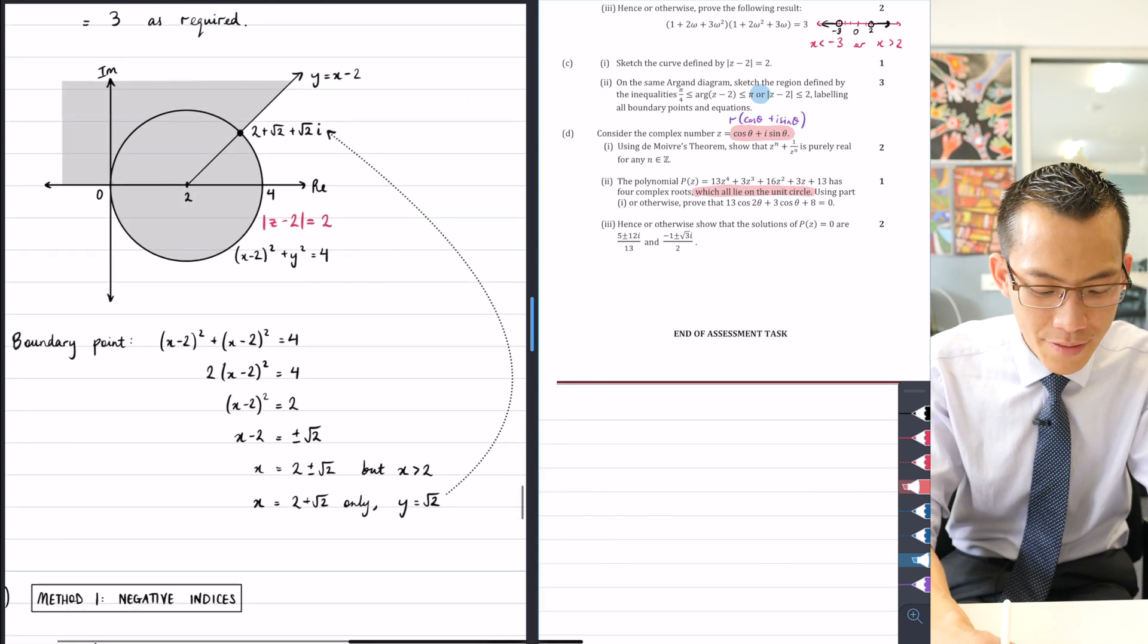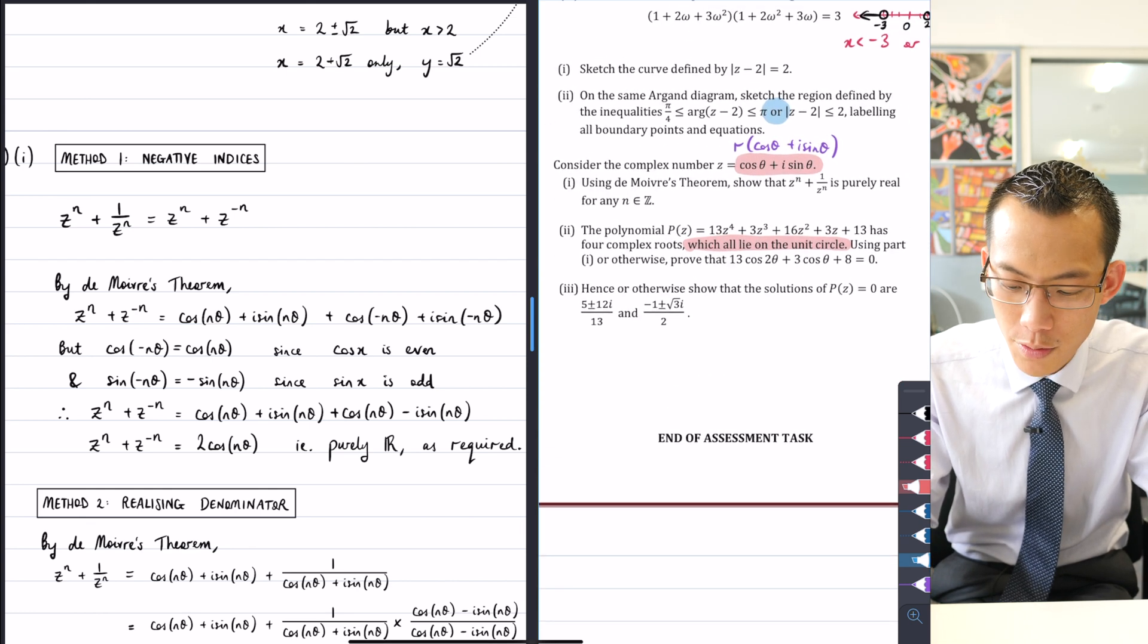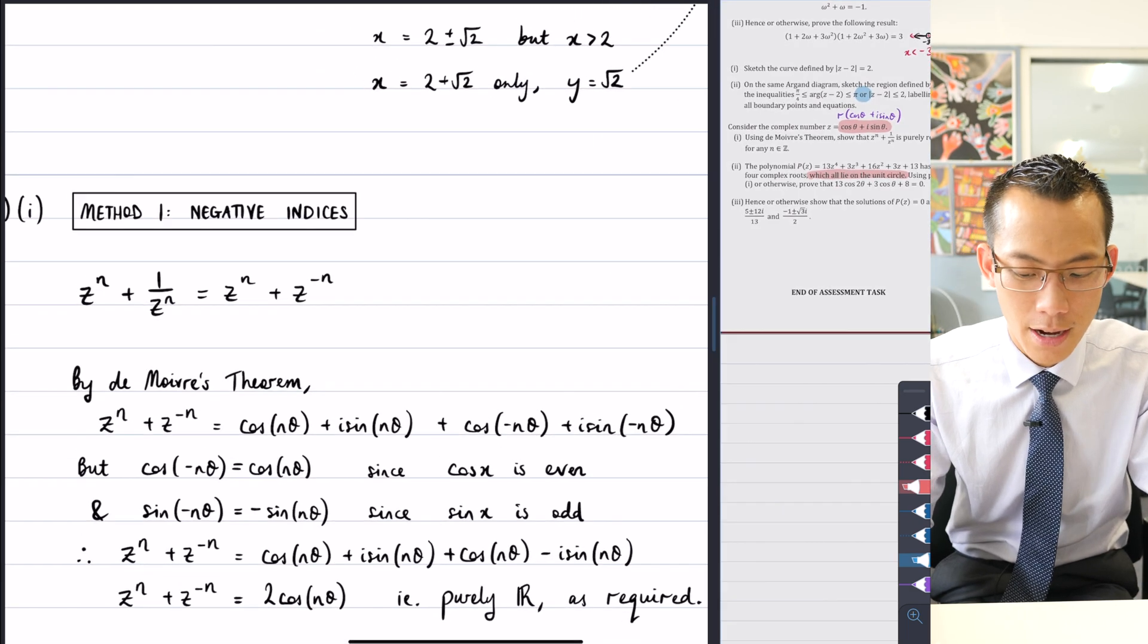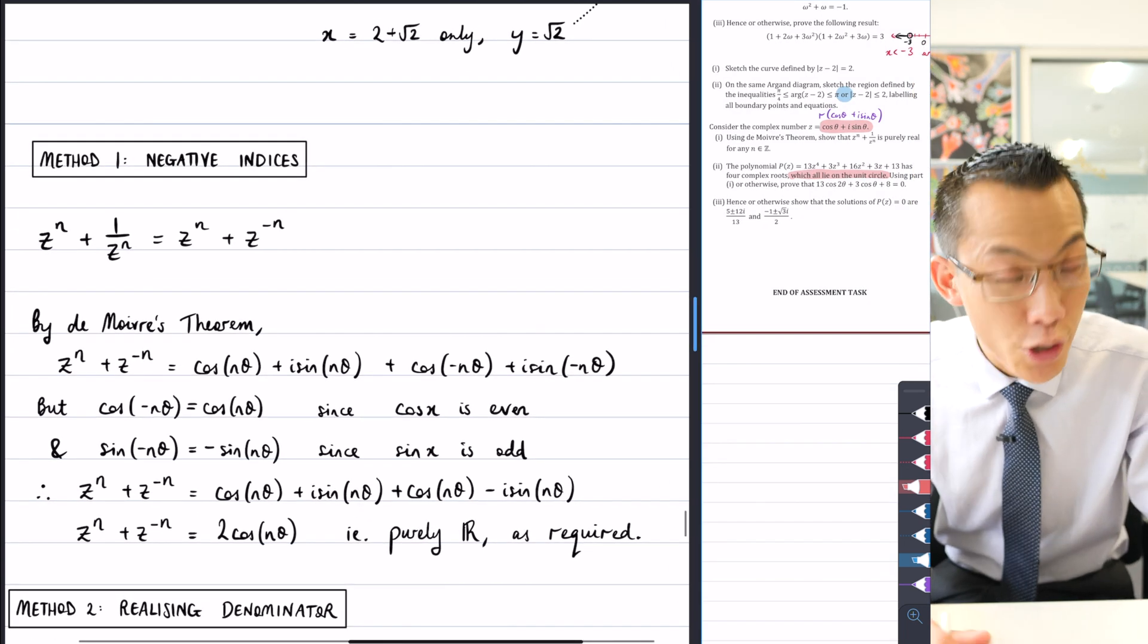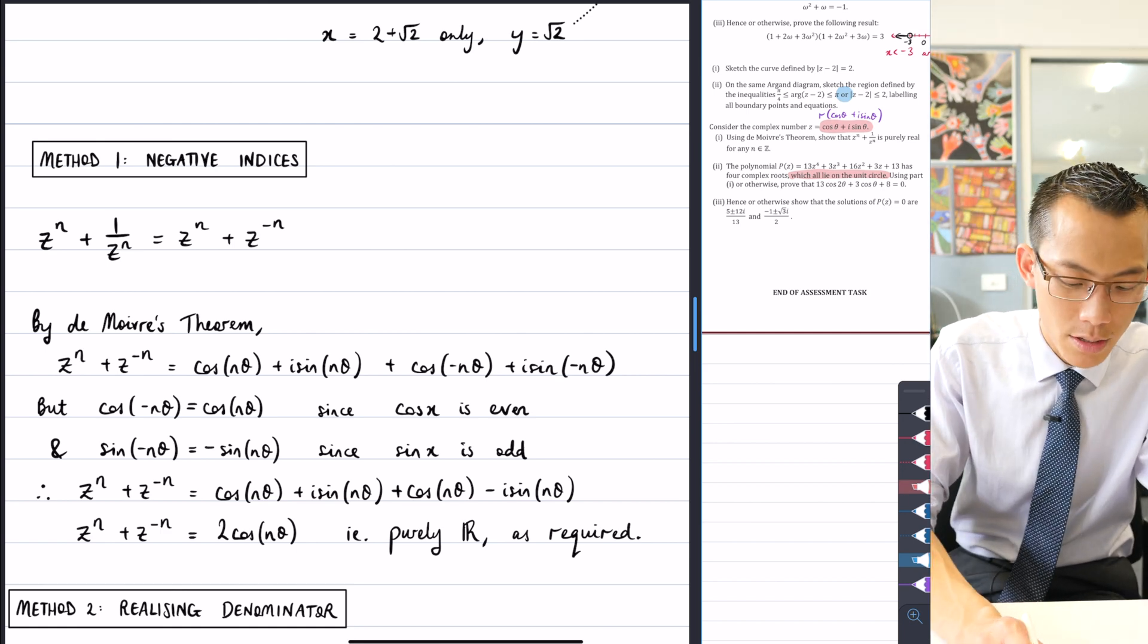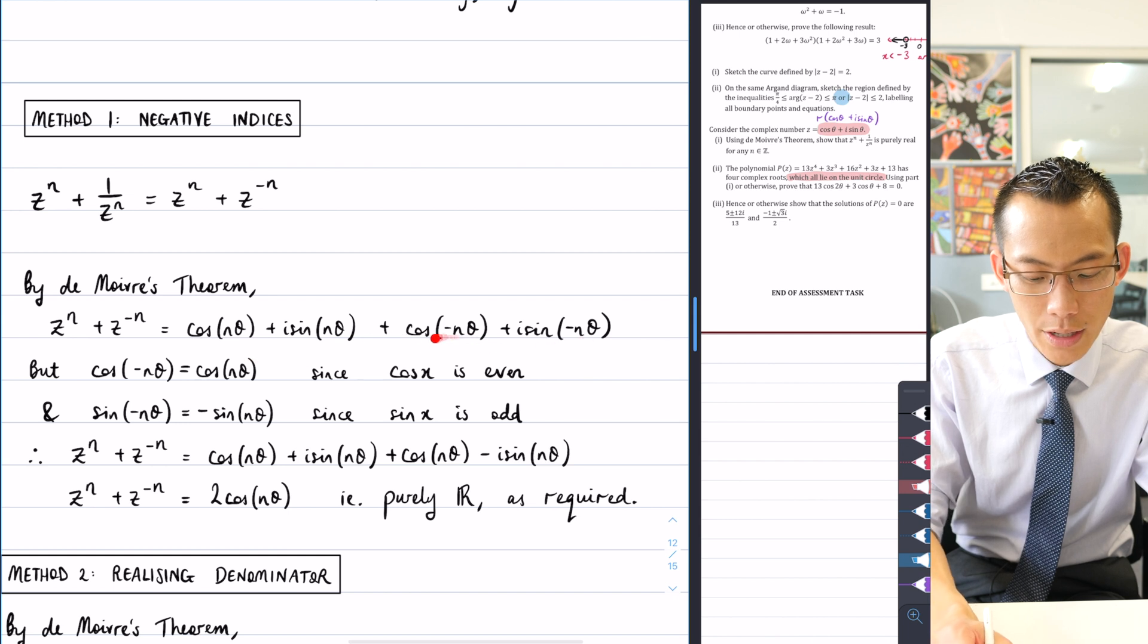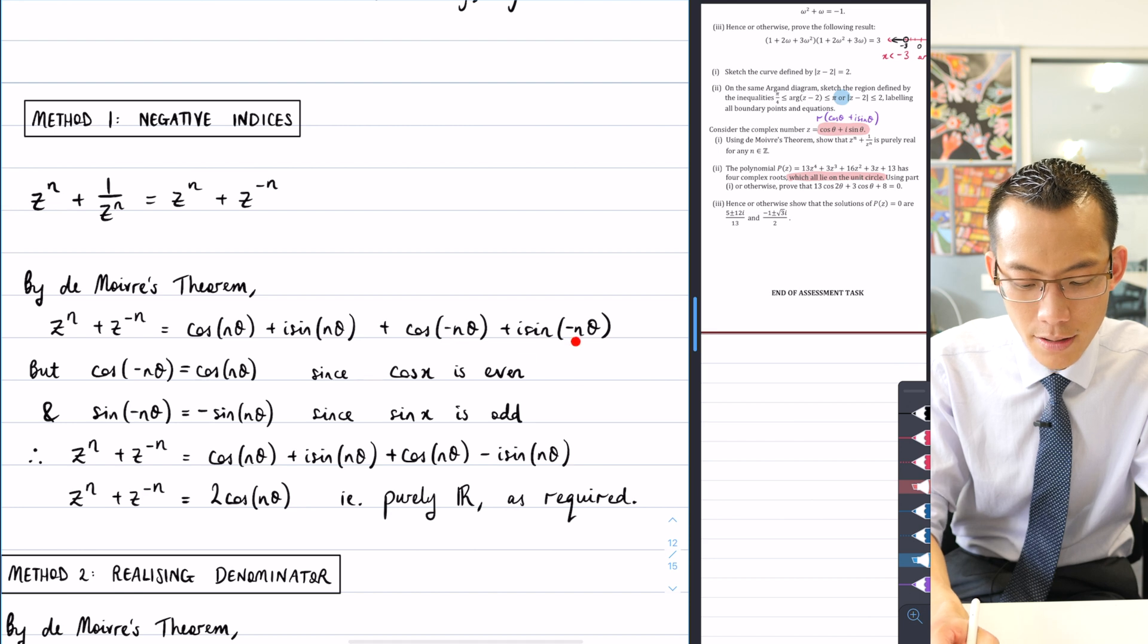In part two it says you're going to need to use that fact that this lies on the unit circle to be able to prove these results. So therefore let's now dive into our result. Okay, part one says using de Moivre's theorem show that z to the n plus 1 over z to the n is purely real for any integer value because de Moivre's theorem only applies for integers. So there's a couple of ways to go about this. You could use negative indices which was fine because de Moivre's theorem holds for negative indices. So here is me quoting de Moivre's theorem just for z to the n and then here's me quoting de Moivre's theorem for z to the negative n.